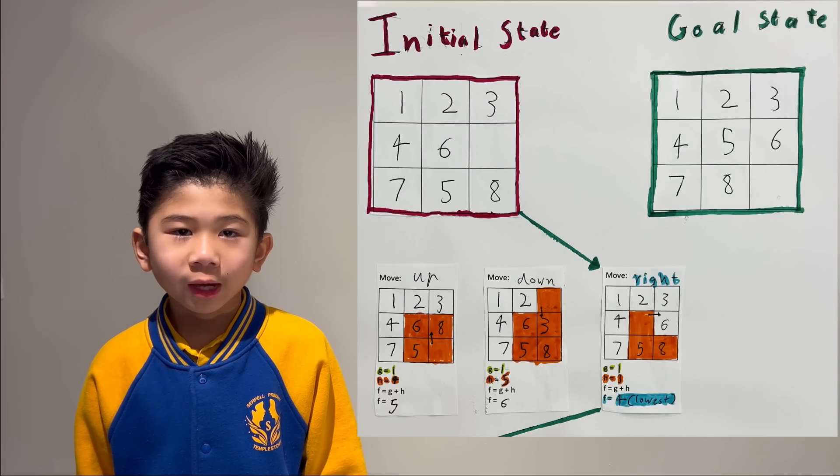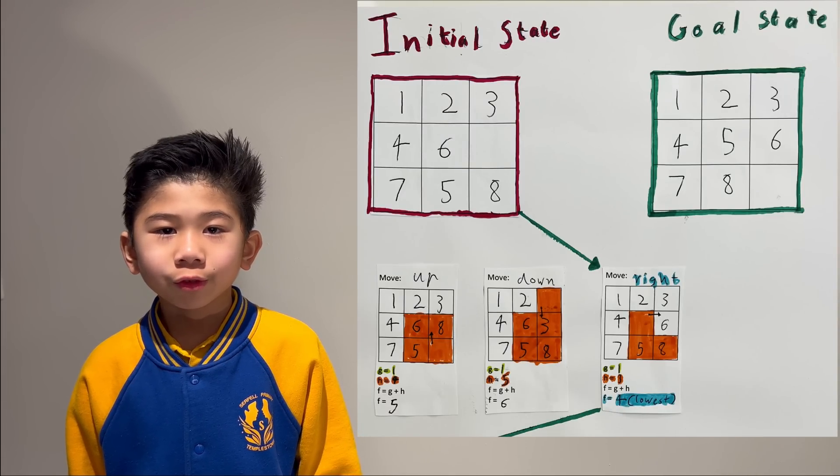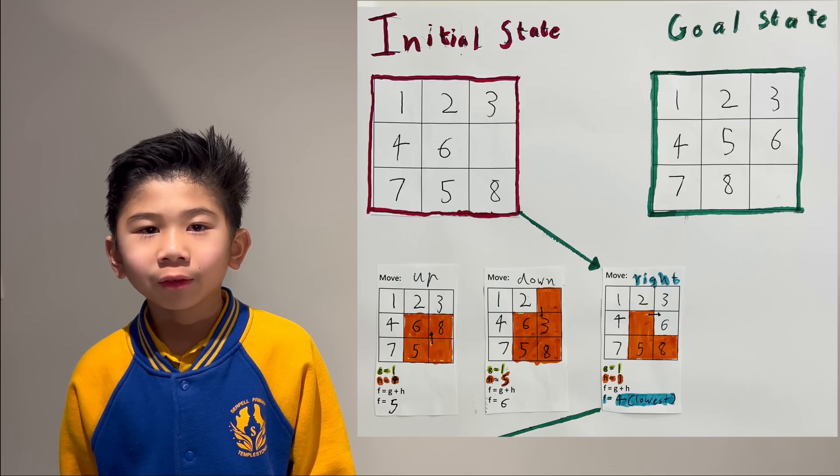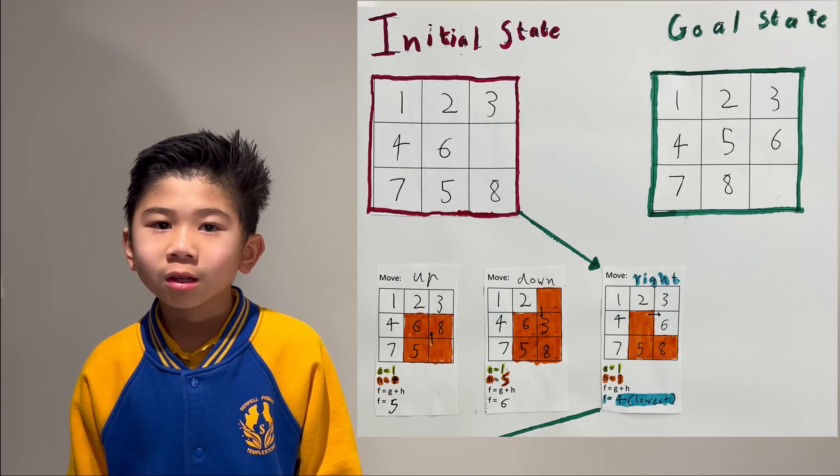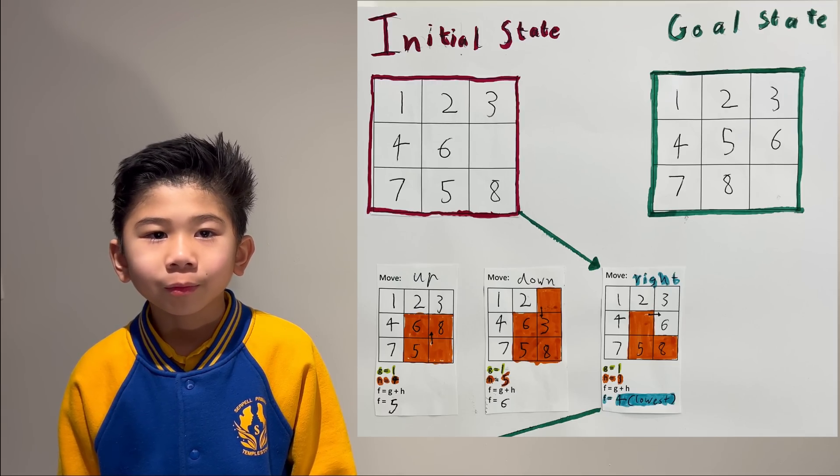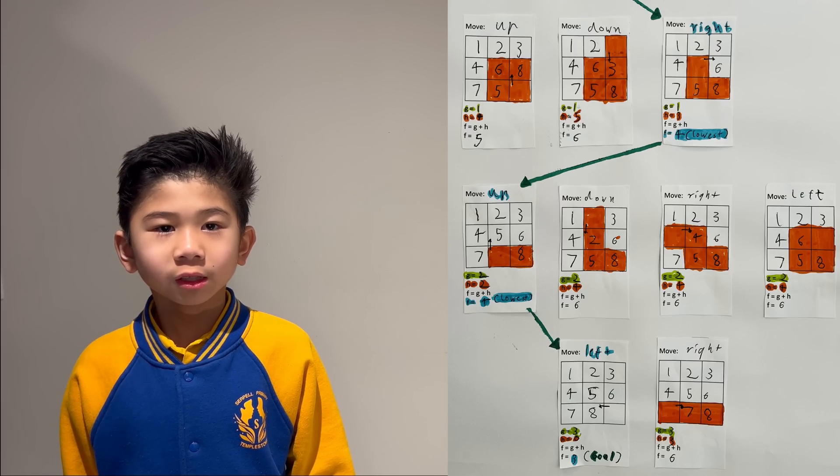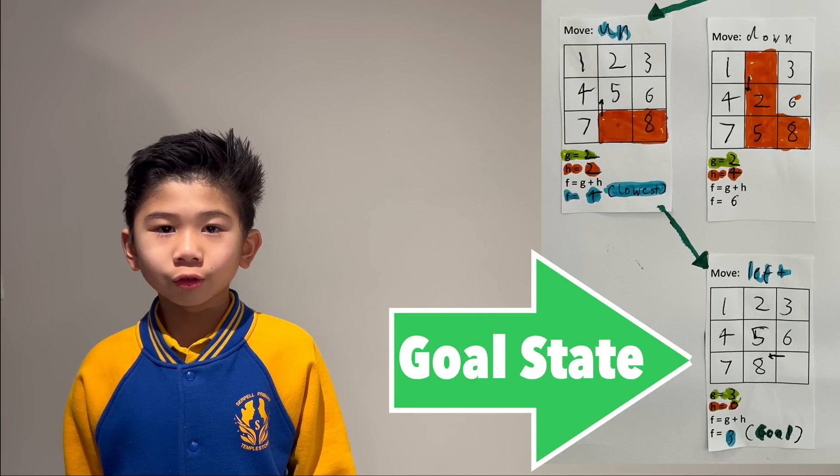In my simple example, I have chosen to go right as it has the least amount of tiles out of place compared to the goal state. These processes are repeated until the goal state is found.